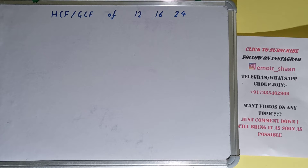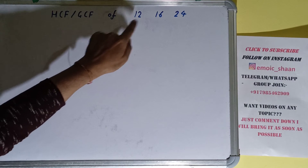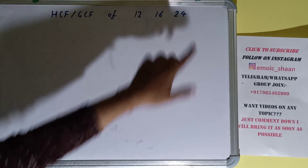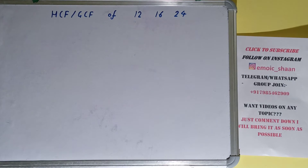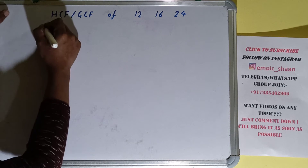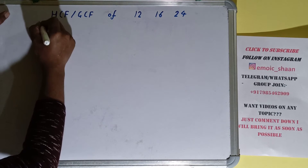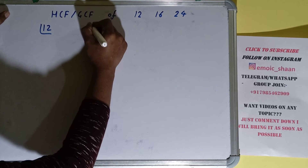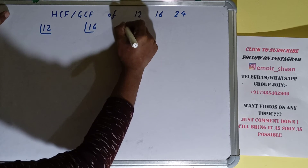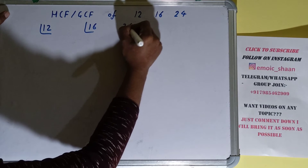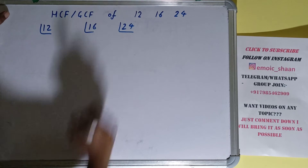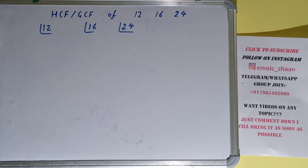Hello friends! In this video I'll be helping you find the HCF or GCF of the numbers 12, 16, and 24. To find it, we first need to prime factorize each of the numbers separately. Let's start with the number 12, checking with the lowest prime number, which is 2.